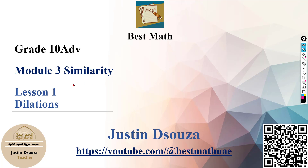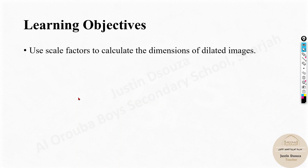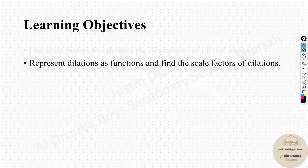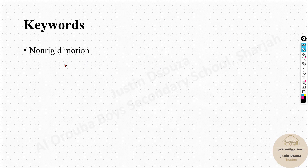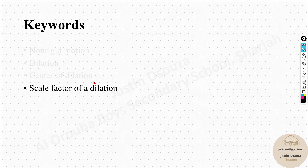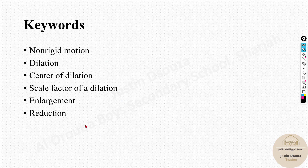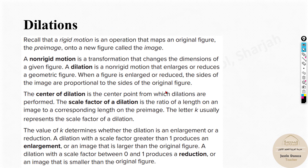We now want module 3: Similarity. You may have studied this in grade 9; we will add on to what we have studied. The first lesson is dilation. The learning objectives are: to use scale factor to calculate the dimensions of a dilated image, and to represent dilation as functions and find the scale factors of dilations. The keywords are: non-rigid motion, dilation, center of dilation, scale factor of dilation, enlargement, and reduction.